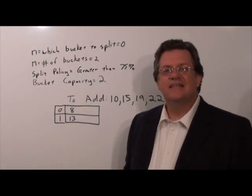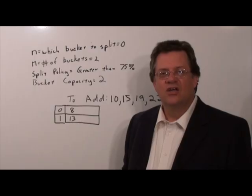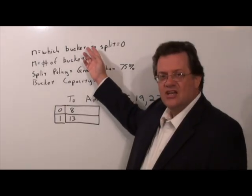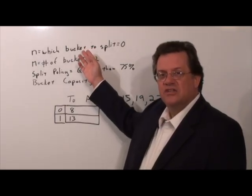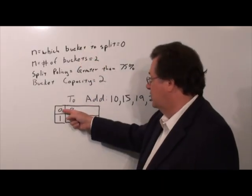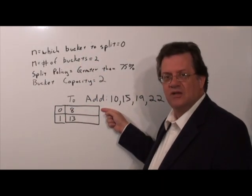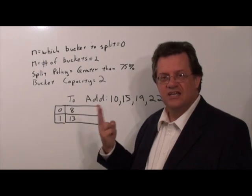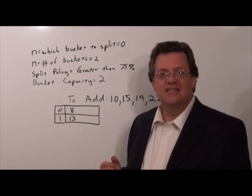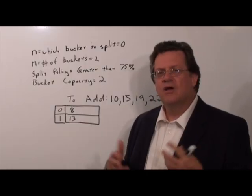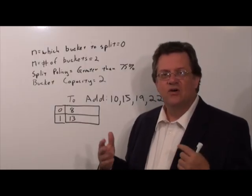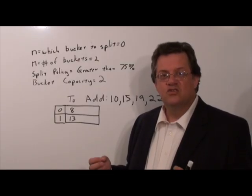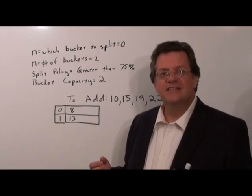Let me explain the difference between linear hashing and extendable hashing. On the board behind me I have several terms which we need to go over. First, when we work with linear hashing we have a value called n which refers to which bucket we're on — so if it's zero, that means this is the bucket we'll split on when we need to do a split. Secondly, we have m which is the number of buckets, in this case 2. Third, we need to have a split policy — when do we go about splitting? We're going to say that if the total number of items relative to the number of buckets is greater than 75 percent, then we need to do a split.